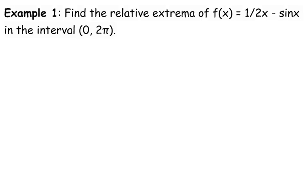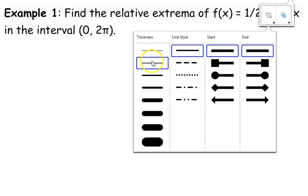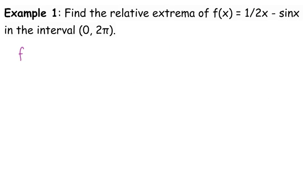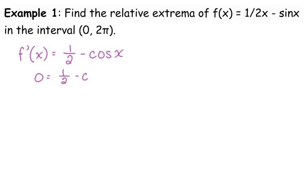About extrema, we should be thinking critical points. Critical points should make us think derivative equal to zero. So let's take the derivative of this function here. The derivative of one-half x is one-half. The derivative of negative sine would be negative cosine. We're setting that equal to zero and we are solving for x.